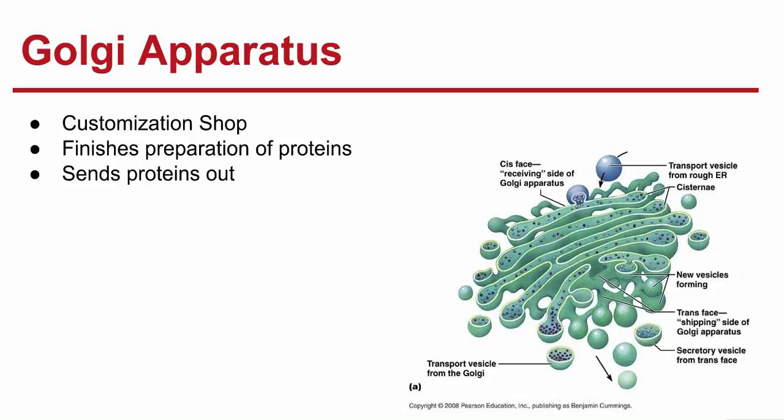Next we have the Golgi apparatus — the customization and finishing shop of the factory. Its function is to modify, sort, and package proteins and other materials from the ER for storage in the cell or secretion outside the cell. It puts the finishing touches on proteins before they're ready to leave the cell and ships them to final destinations throughout or outside the cell. Here we can see the transport vesicles from the Golgi apparatus, filled with proteins that are shipped all around and outside the cell.